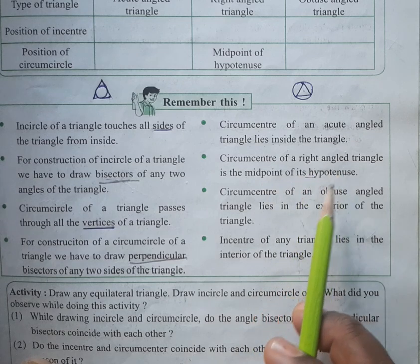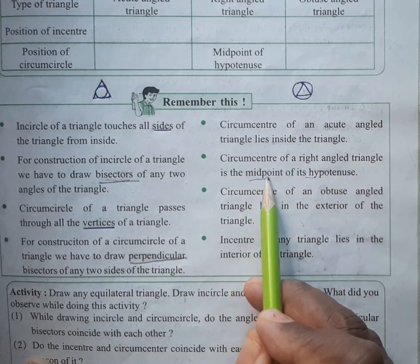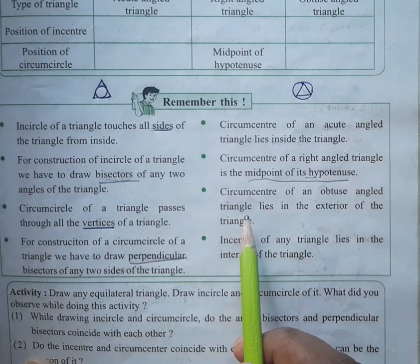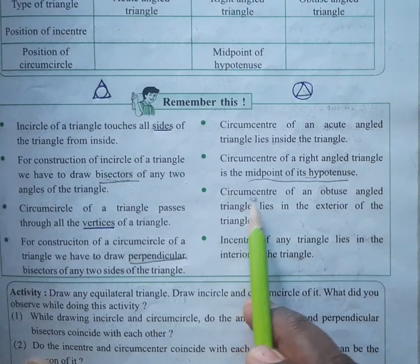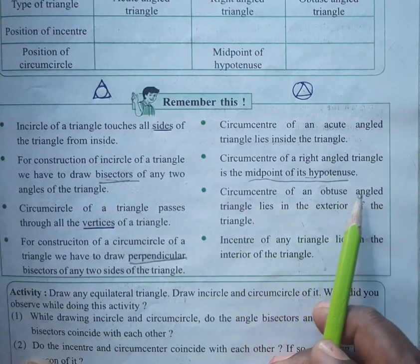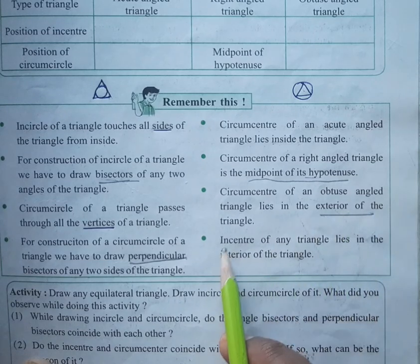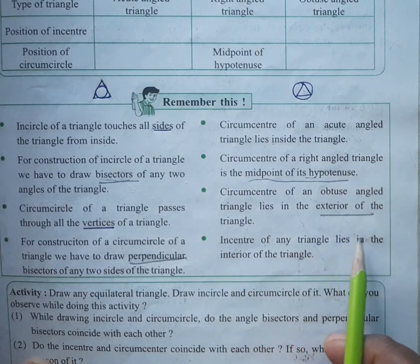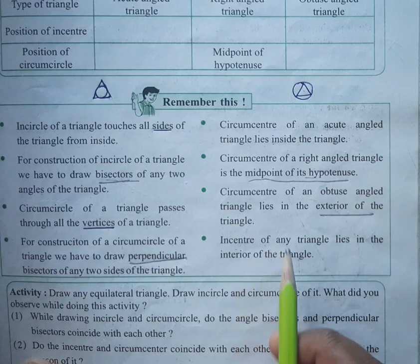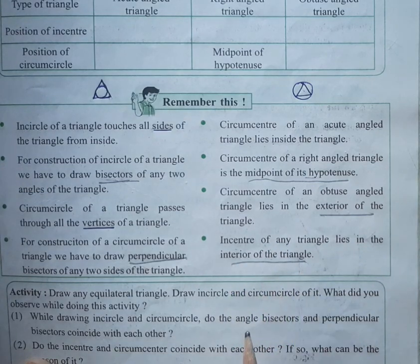The circumcenter of a right angle triangle lies on the midpoint of the hypotenuse. The circumcenter of an obtuse angle triangle lies in the exterior of the triangle.